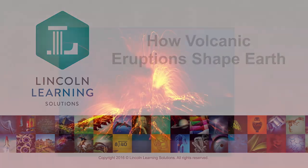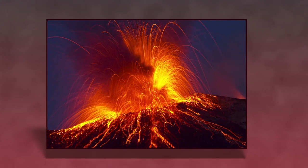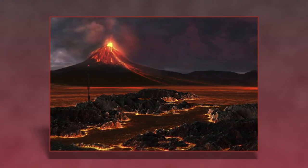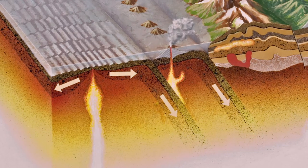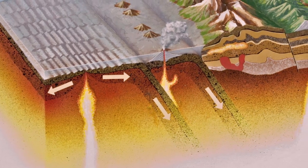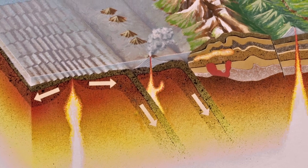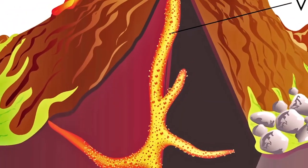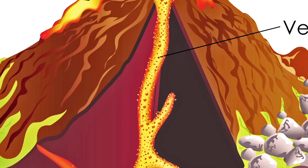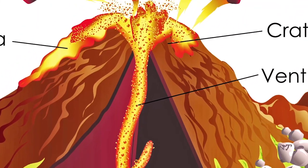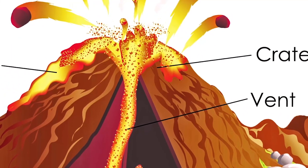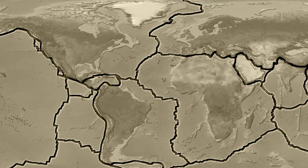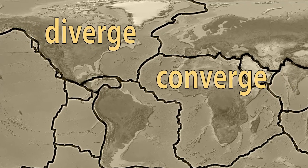Volcanoes are found throughout the planet, on the continents as well as on the ocean floor. Volcanoes are mountains or hills that form when molten material erupts from Earth's interior through the crust. Volcanoes usually form over hotspots in Earth's mantle or at places where tectonic plates diverge or converge.